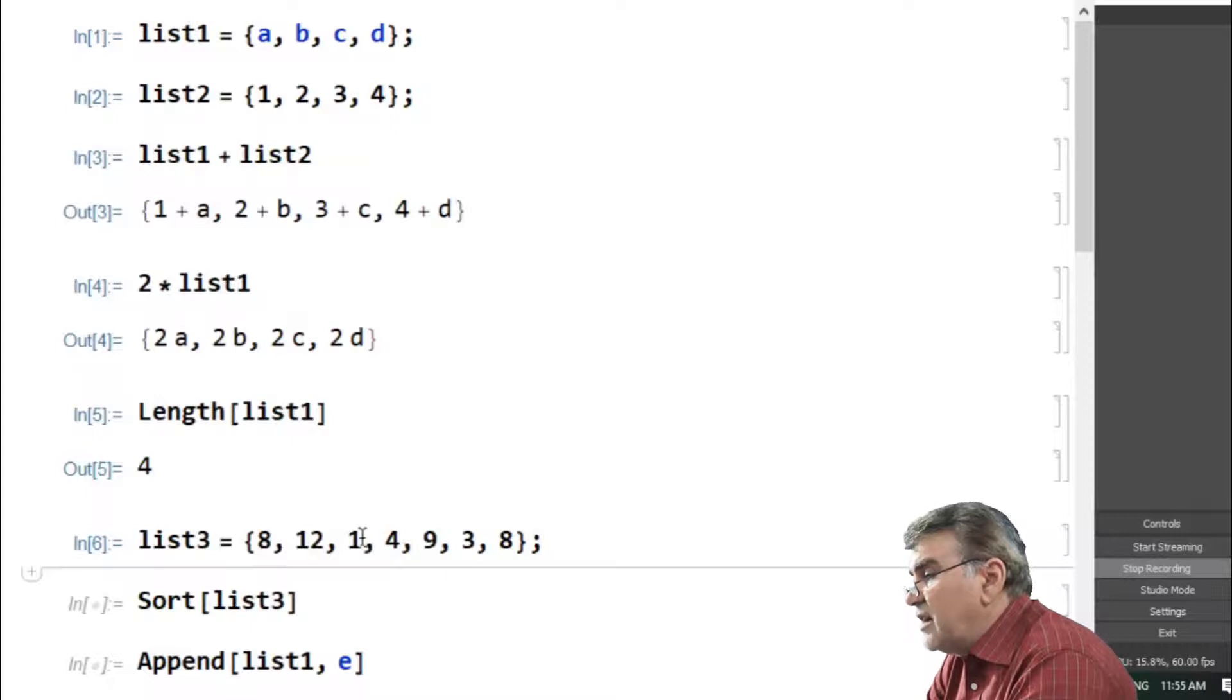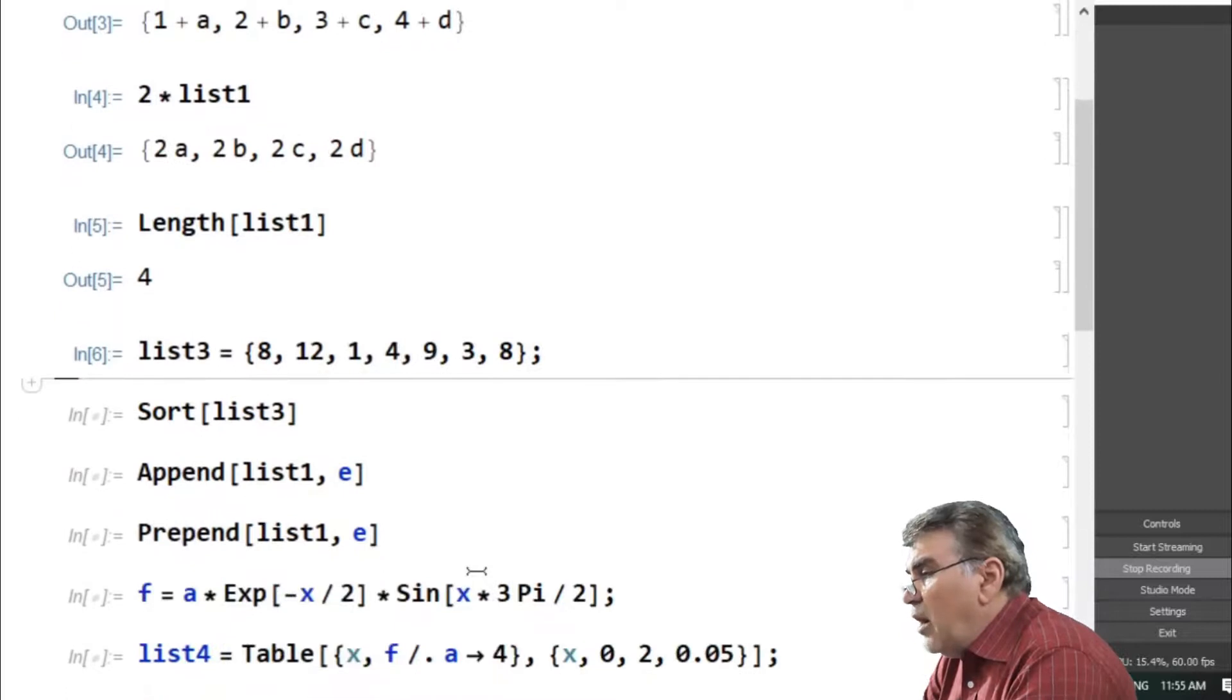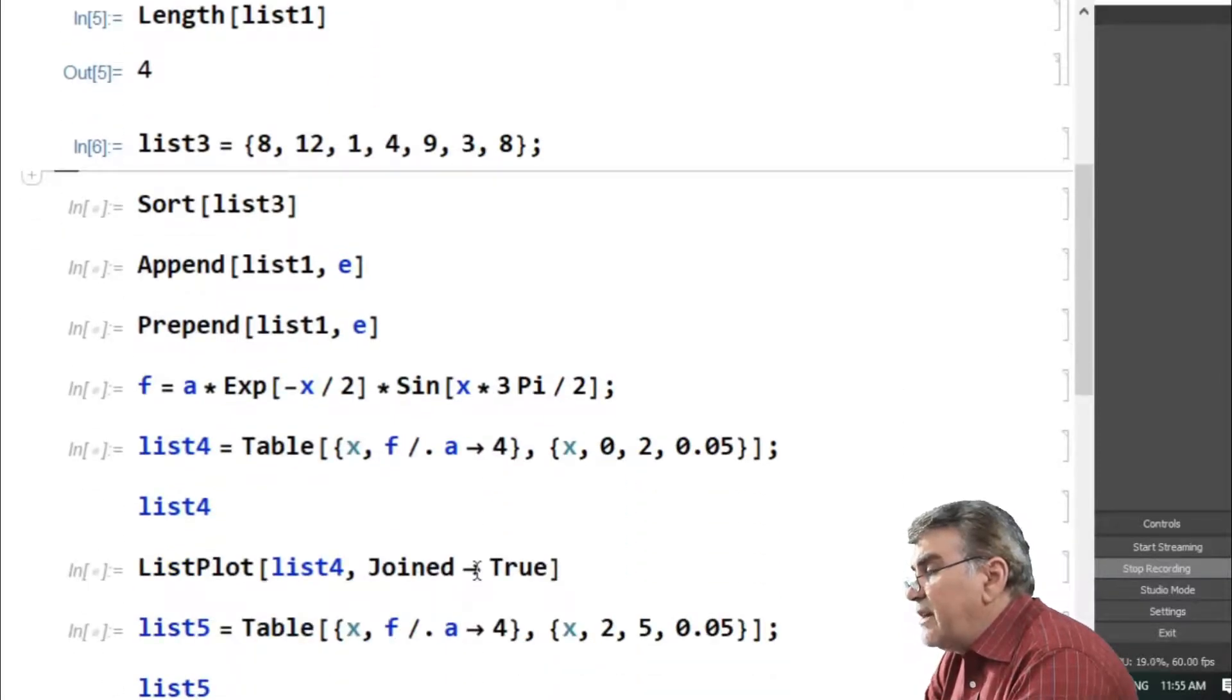If I want to arrange these elements in ascending order, I have to enclose list3 as the argument to the sort command, and you see all the elements are arranged in ascending order.